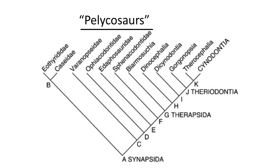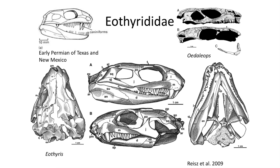Basal synapsids are often referred to as pelycosaurs, a paraphyletic group of basal synapsids which are united by primitive features of the skull and skeleton, and many of which had sail backs. The earliest synapsids appeared during the late Pennsylvanian and early Permian periods in North America, including the early family Eotheridae.